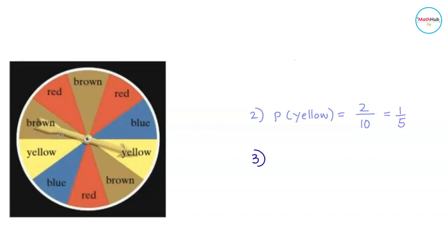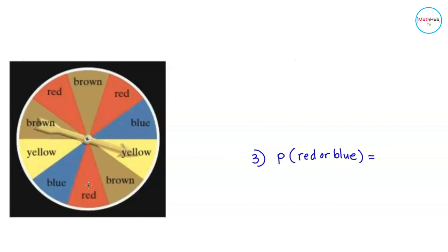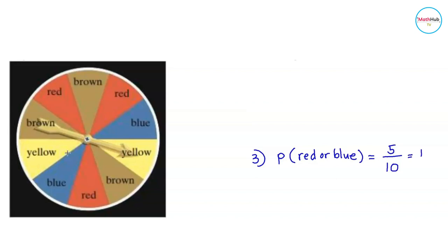Third, we want to find the probability of landing on a region that is red or blue. To solve that, we will count the number of regions that are either red or blue. We have three reds and two blue regions, giving us a total of five regions. Divided by the total possible outcomes, which is 10, the probability of landing either on a red or blue region is 5 over 10, which is equal to one-half.